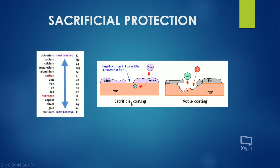In sacrificial coating, the iron is coated with zinc rather than tin. Because zinc is more reactive than iron, even if a hole forms in the zinc coating, the oxygen reacts with the zinc instead of the iron. The zinc sacrifices itself in place of the iron, so the iron doesn't rust.